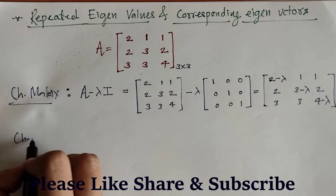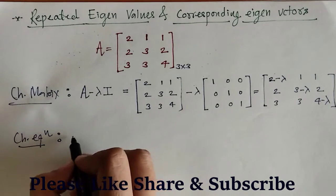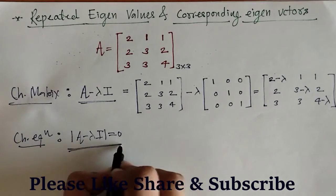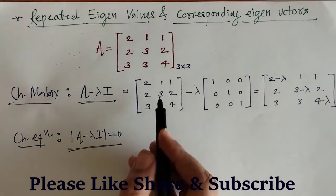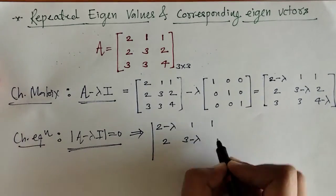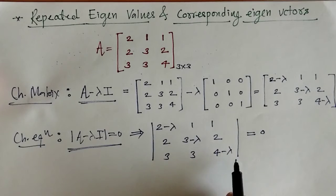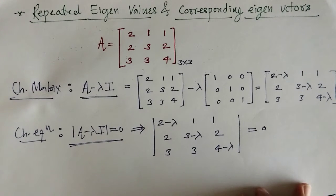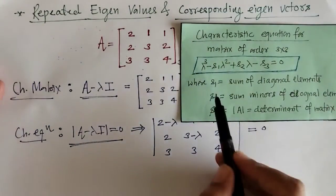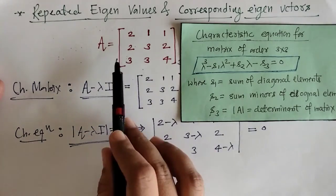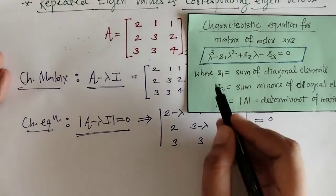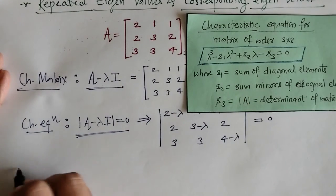Now we have to find the characteristic equation, which is given by the determinant of this matrix equal to 0. We will find the characteristic equation for this given matrix by putting the determinant equal to 0. We will use the standard result for finding the characteristic equation of a matrix of order 3, where we know the values of S1, S2, and S3.